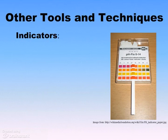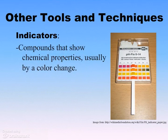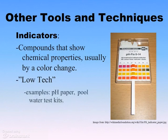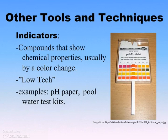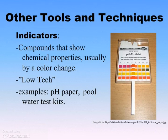Another group of technologies employed by biologists and all kinds of people are indicators. These are compounds that show different chemical properties, most often by a color change. Lots of people can use these — that's why they're referred to as low-tech. You don't need a whole lot of training. Many people have swimming pools, and these are used there. These are really, really common and very helpful analytically.